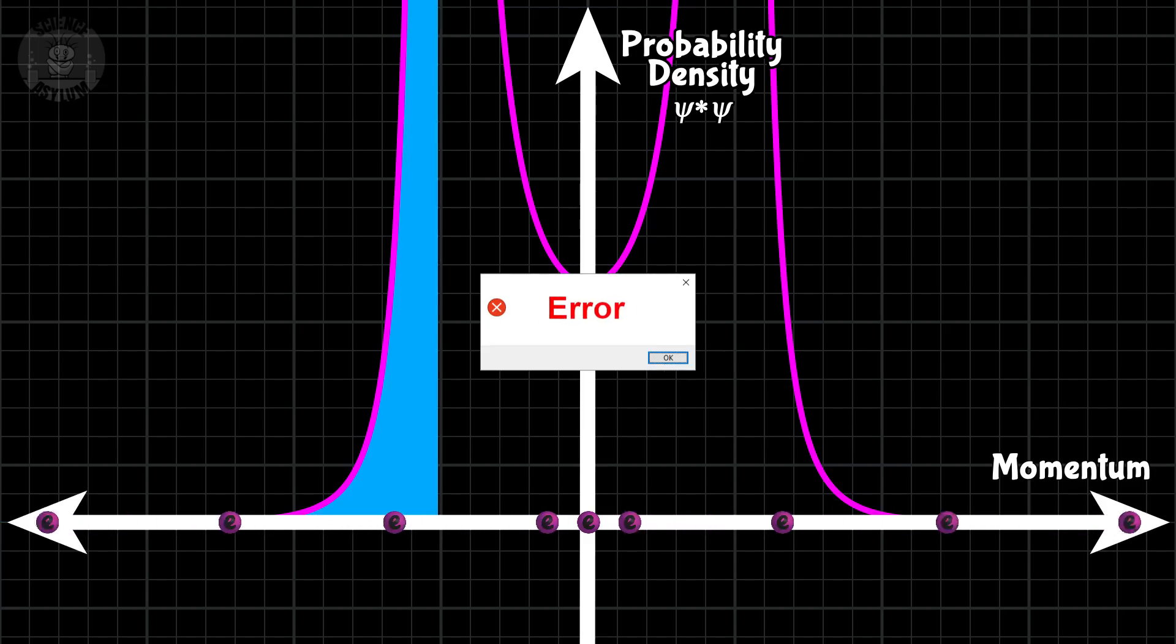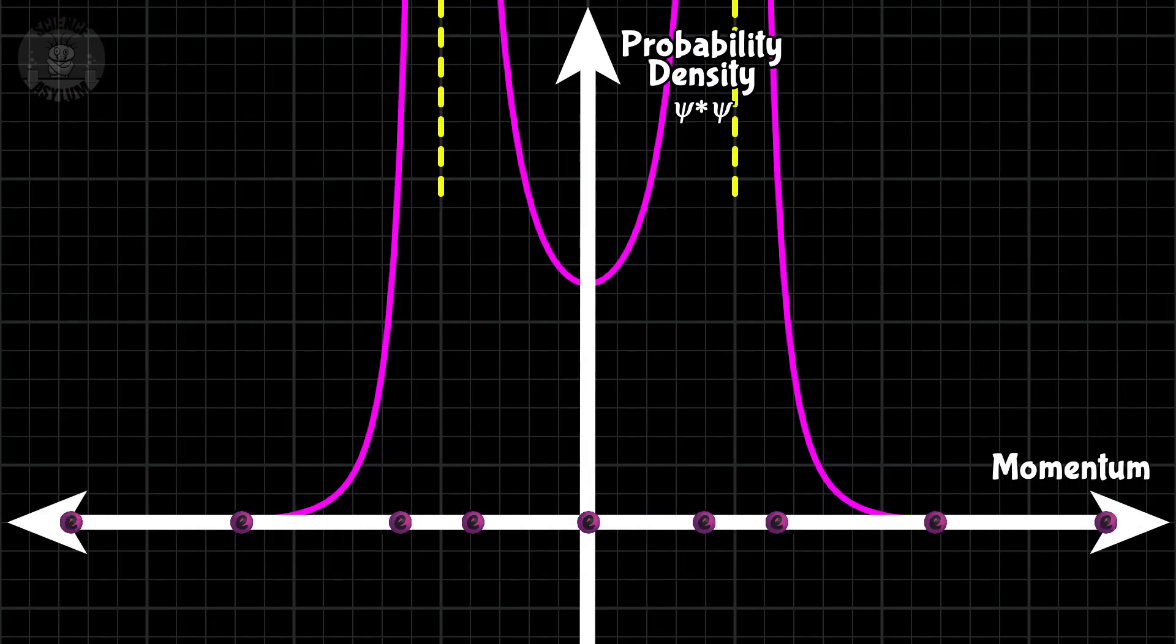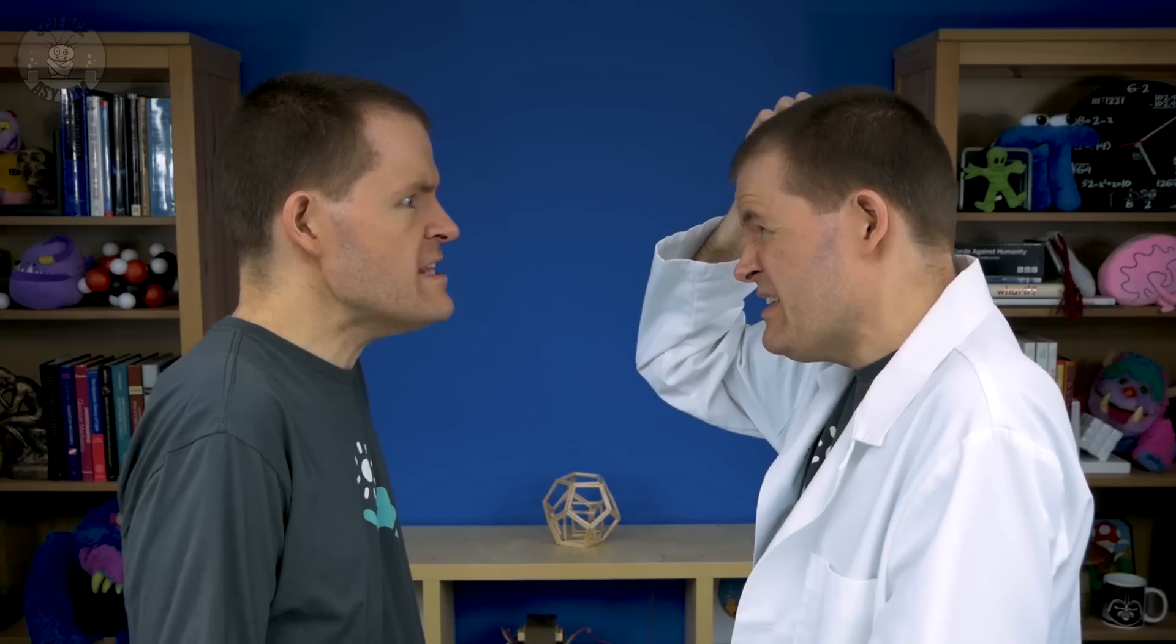As long as the total area is - whoa, whoa, wait, whoa, whoa, that wasn't supposed to happen. It appears our probability density blows up to infinity in a couple places. What's that mean?